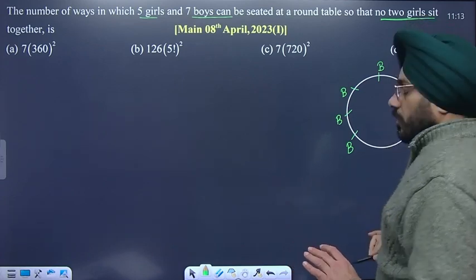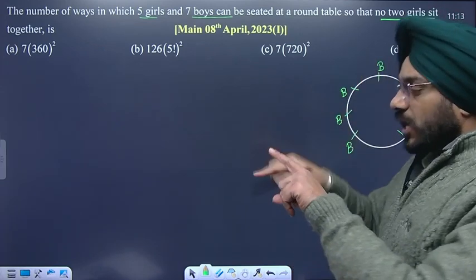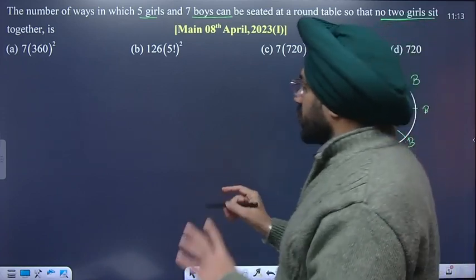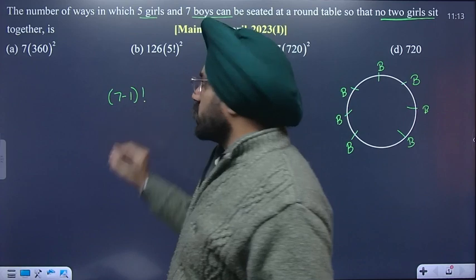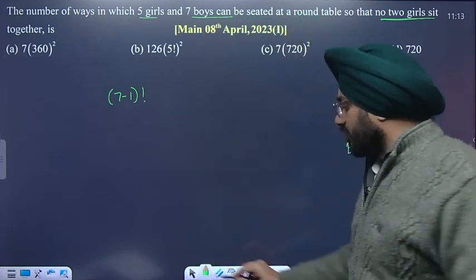This means seven boys in the circular arrangement will be seven minus one factorial. If you have seven boys in the circular arrangement, then it will be (7-1)! which equals 6!.